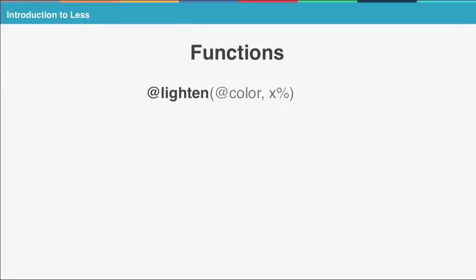First you have the function lighten, which is used to increase the lightness of a color. It takes two parameters: first the color object, then the amount by how much you want to increase the lightness of the color object. This can be any value between 0 and 100%, and this function will allow you to access a lighter shade of an existing color.